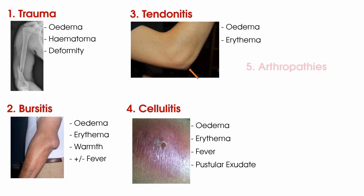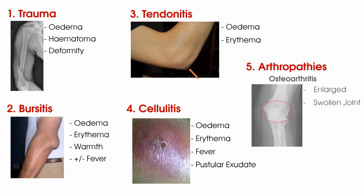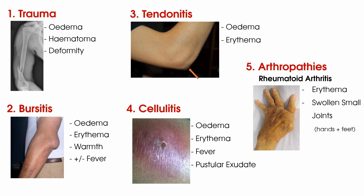Finally, number five is arthropathies, which can be categorised into osteoarthritis, rheumatoid arthritis and crystal arthritis. For osteoarthritis you may expect to find an enlarged swollen joint, and in progressed cases you may find hard swelling when you palpate. With rheumatoid arthritis you may find redness or swelling at the joint you are assessing, as well as other joints, particularly the hands and the feet.